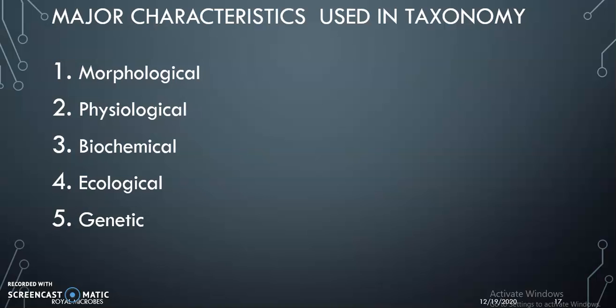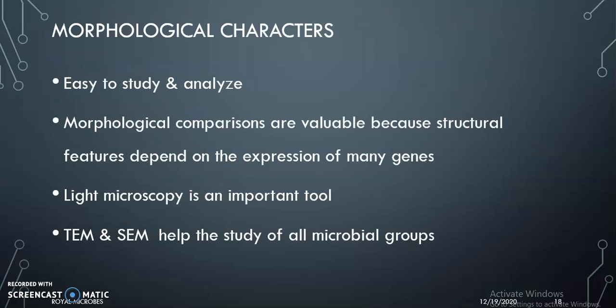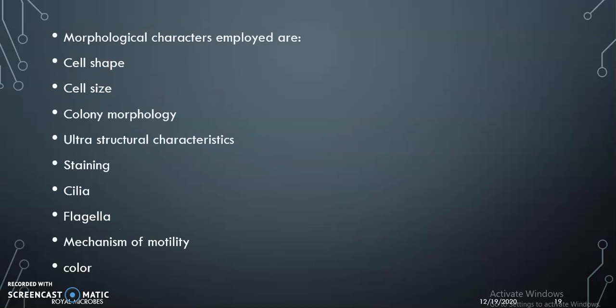The major characteristics used in taxonomy are morphological, physiological, biochemical, ecological, and genetic characters. Morphological characters are very easy to study and analyze. Comparison is valuable because many structural features depend on the expression of many genes. Light microscope is an important tool; transmission electron microscope and scanning electron microscope also help. Morphological characters employed include cell shape, cell size, colony morphology, staining, cilia, flagella, ultrastructural characters, mechanism of motility, color, etc.